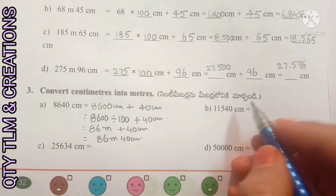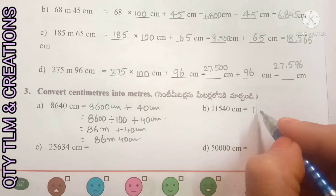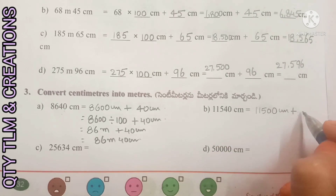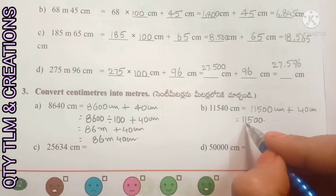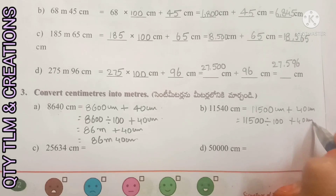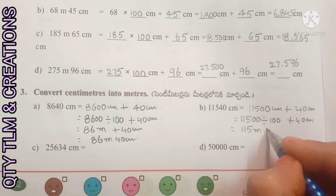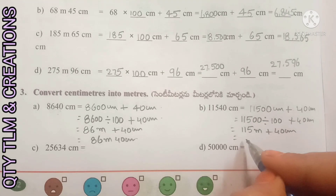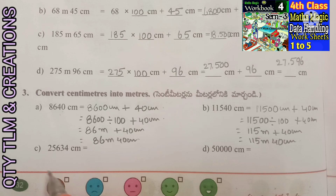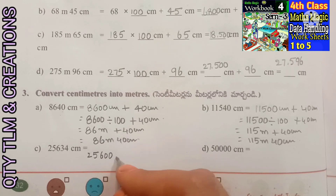Next, 11,540 centimeters: 11,500 centimeters plus 40 centimeters. 11,500 divided by 100 equals 115 meters plus 40 centimeters equals 115 meters 40 centimeters. Next, 25,634 centimeters: 25,600 centimeters plus 34 centimeters.